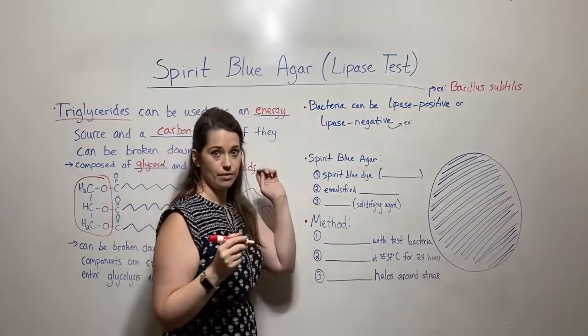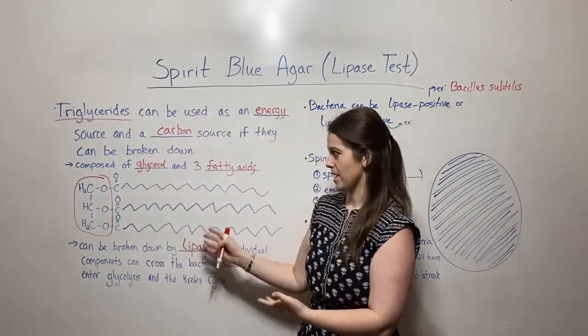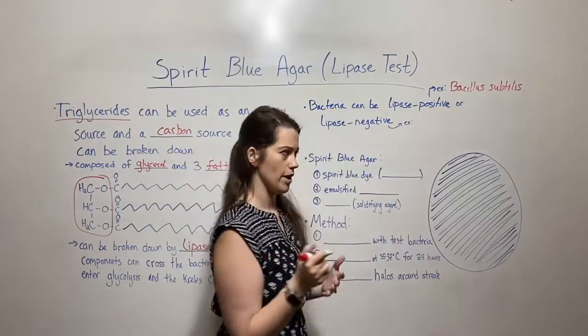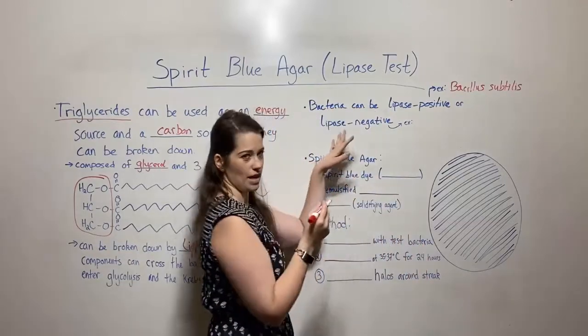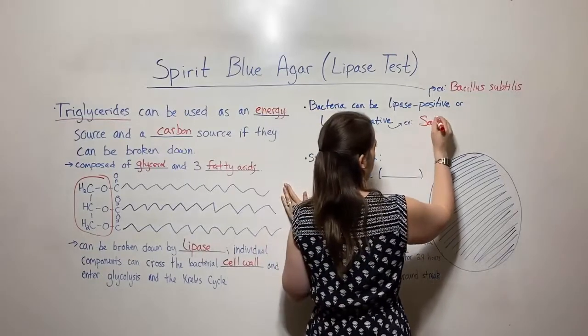Bacteria can also be lipase negative, meaning that they do not have lipase and cannot break down this thing and use it for energy and carbon. An example of a lipase negative bacterium would be Salmonella typhimurium.